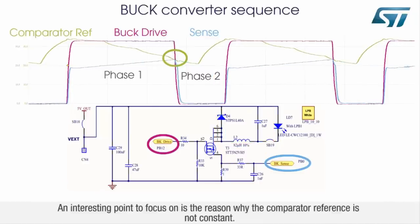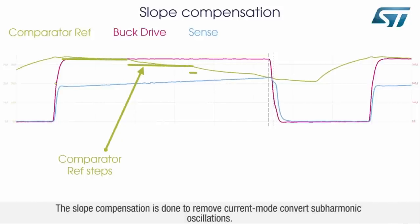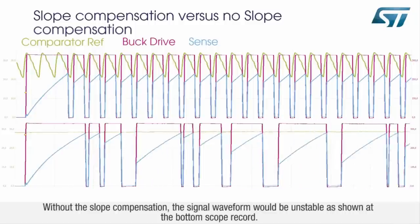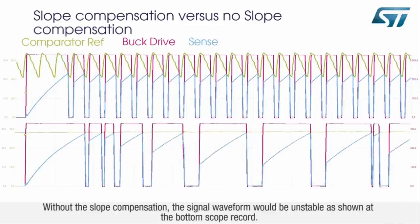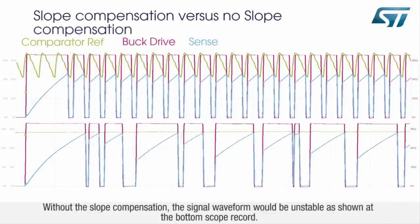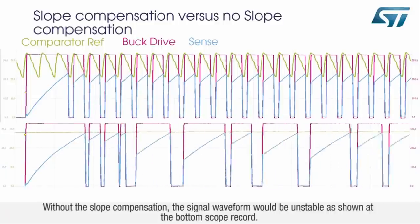An interesting point is why the comparator reference is not constant. Slope compensation is applied to remove current-mode converter subharmonic oscillations. Without the slope compensation, the signal waveform would be unstable, as shown in the bottom scope record.